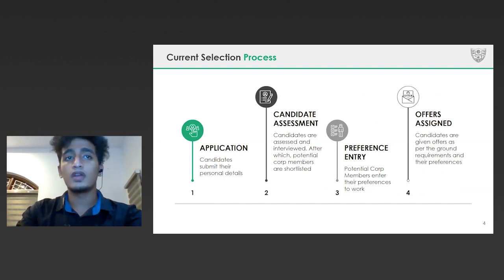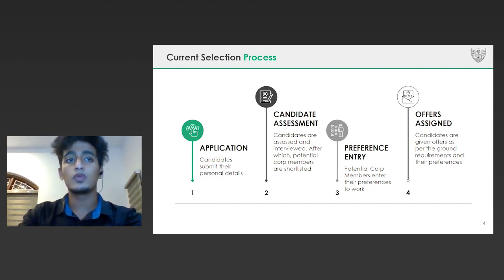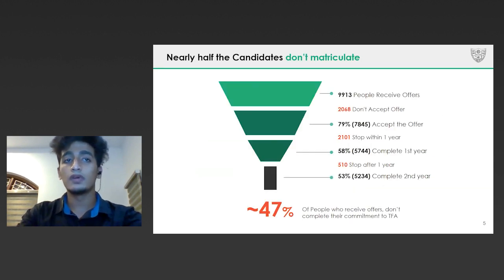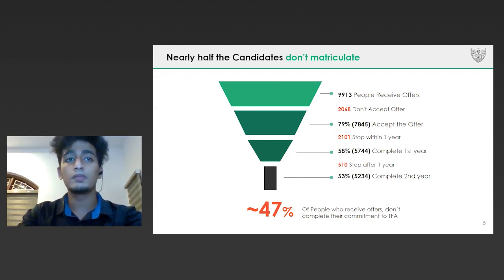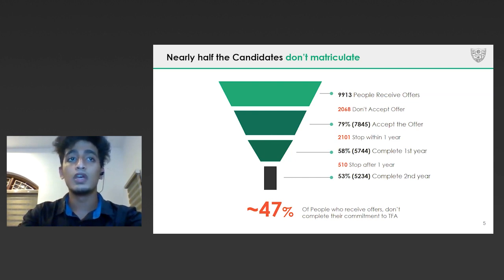Let us now understand how candidates are selected. Firstly, interested applicants are evaluated through resumes, essays, and interviews. TFA then shortlists potential core members. These candidates then enter their preferences, using which TFA then makes them offers. However, as can be seen, almost 10,000 candidates get offers from TFA, but only 53% of the core members fulfill their commitment. We noticed that ensuring a positive experience throughout the program is as important as giving them an irrefutable offer, so that more people contribute towards TFA's goal.